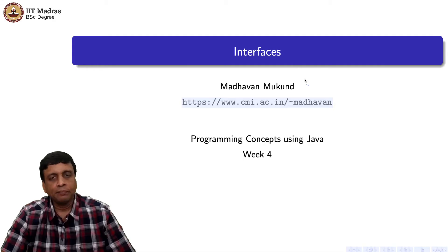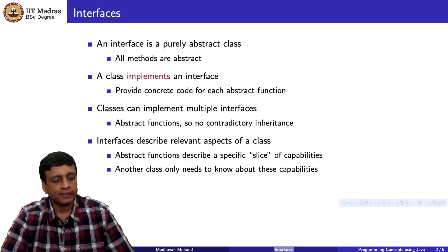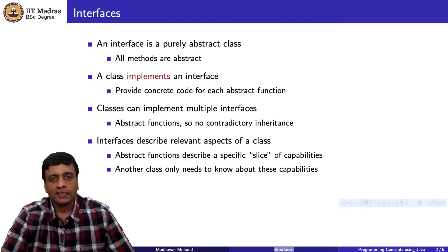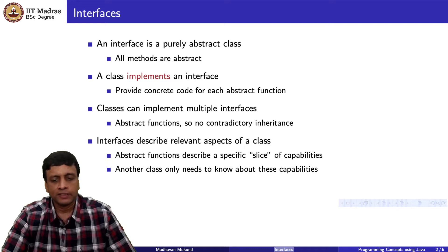We saw last time that interfaces are a special type of abstract class. An interface is purely abstract — inside an interface everything must be abstract. In particular, all methods must be abstract, and since it is an abstract class and we cannot create objects of it, there are no instance variables either.